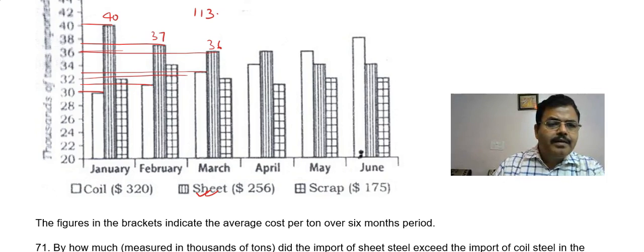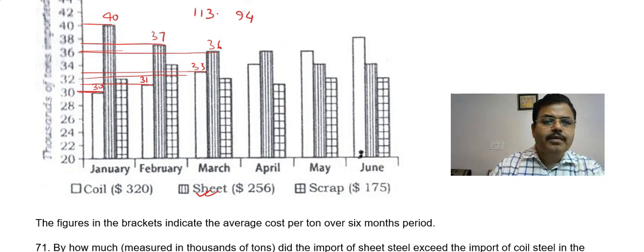31 plus 30, 33. This is 33, that one is 31, and this one is 32. So this total will be 94, so 94. But how much difference? 6 plus 13 is 19, so the difference is 19.